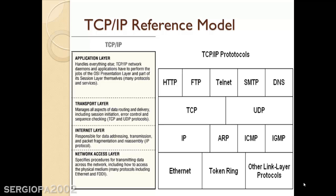Then we have the transport layer, which manages all aspects of data routing and delivery, including session initiation, error control, and sequencing checking. This is very similar to what the transport layer in the OSI reference model does. For that, it has two major protocols: TCP and UDP. TCP, or the Transmission Control Protocol, is a connection-oriented protocol.